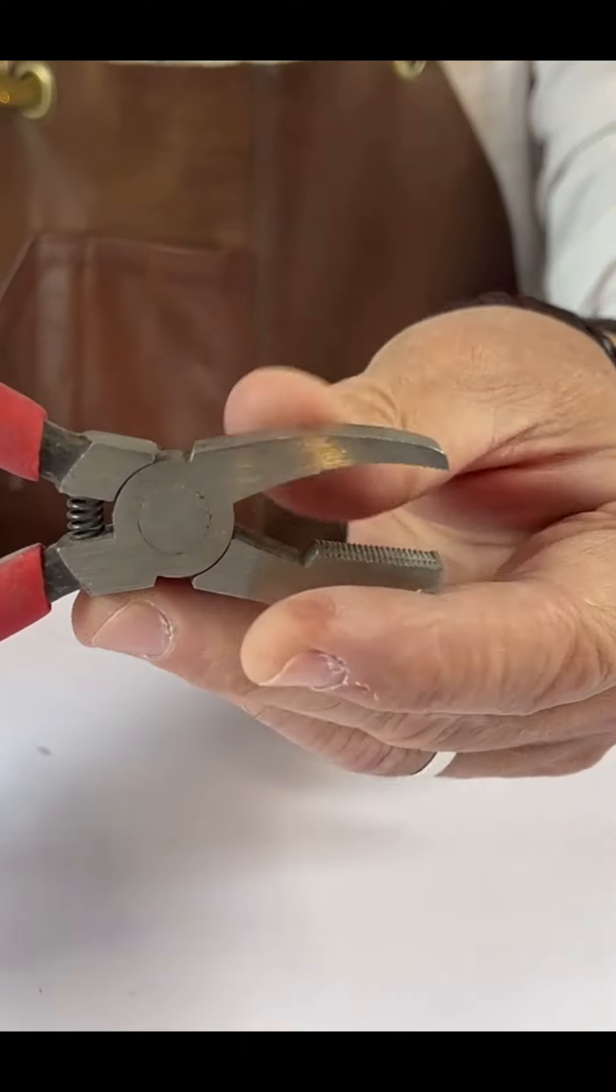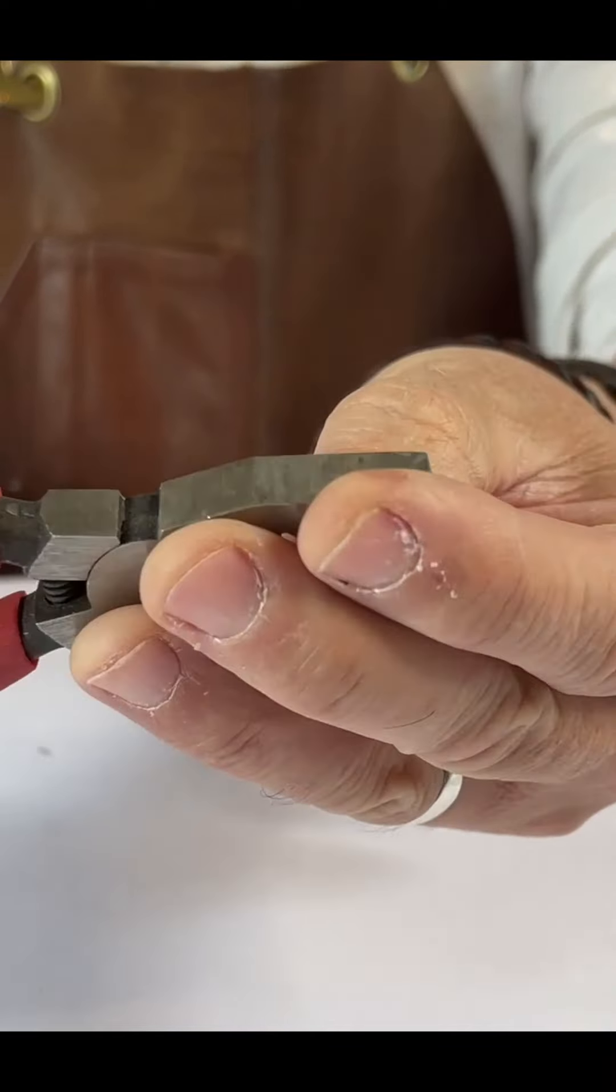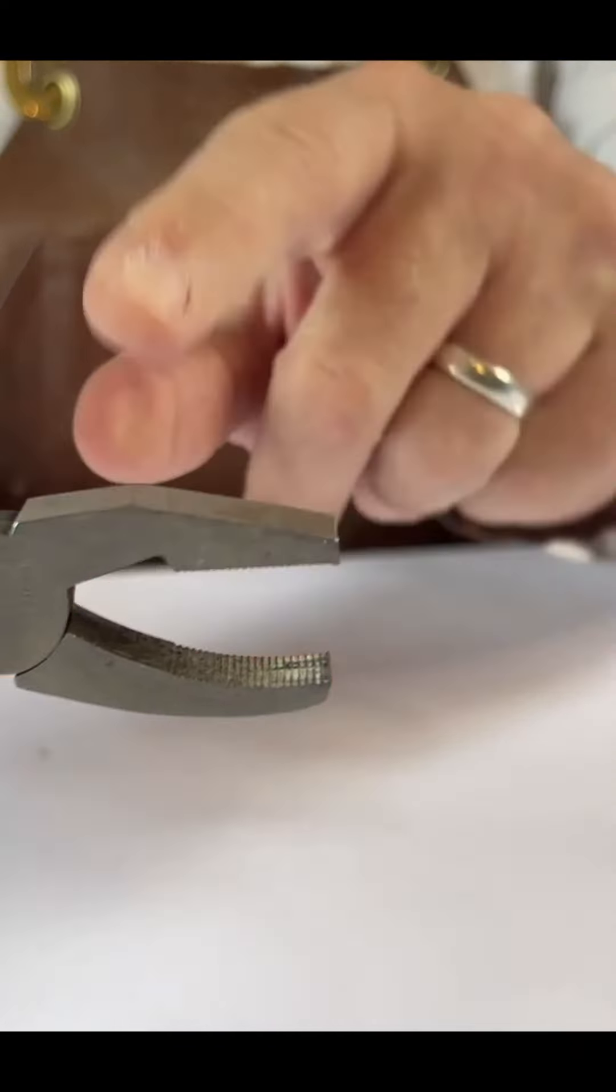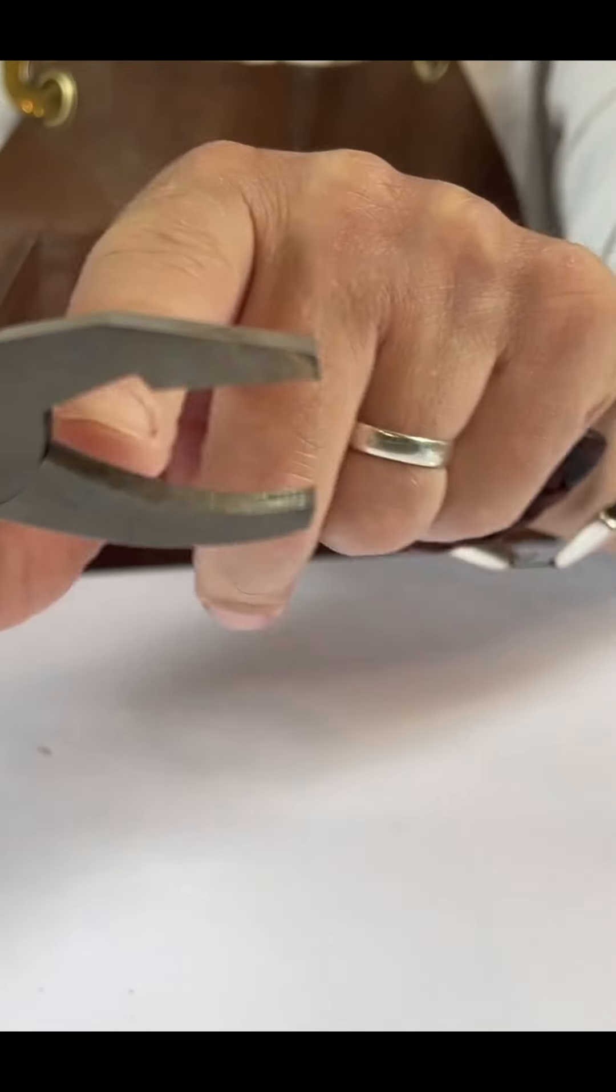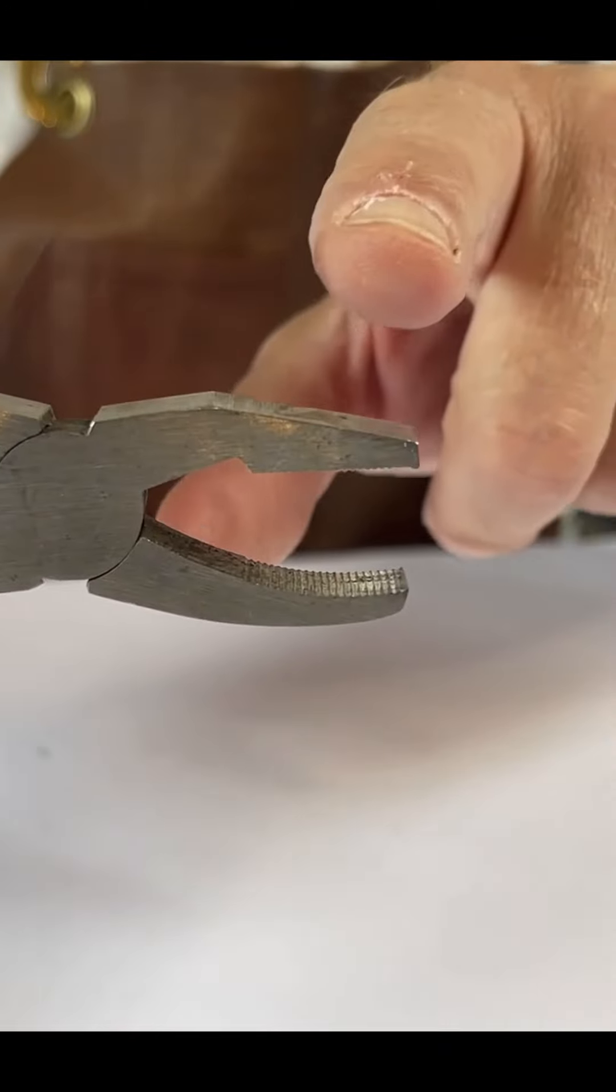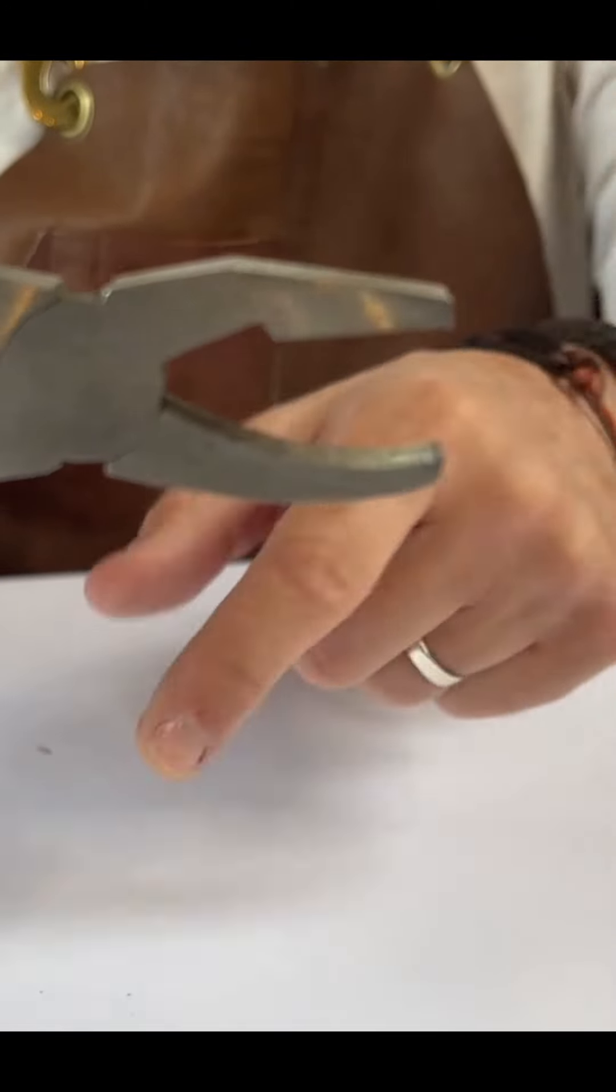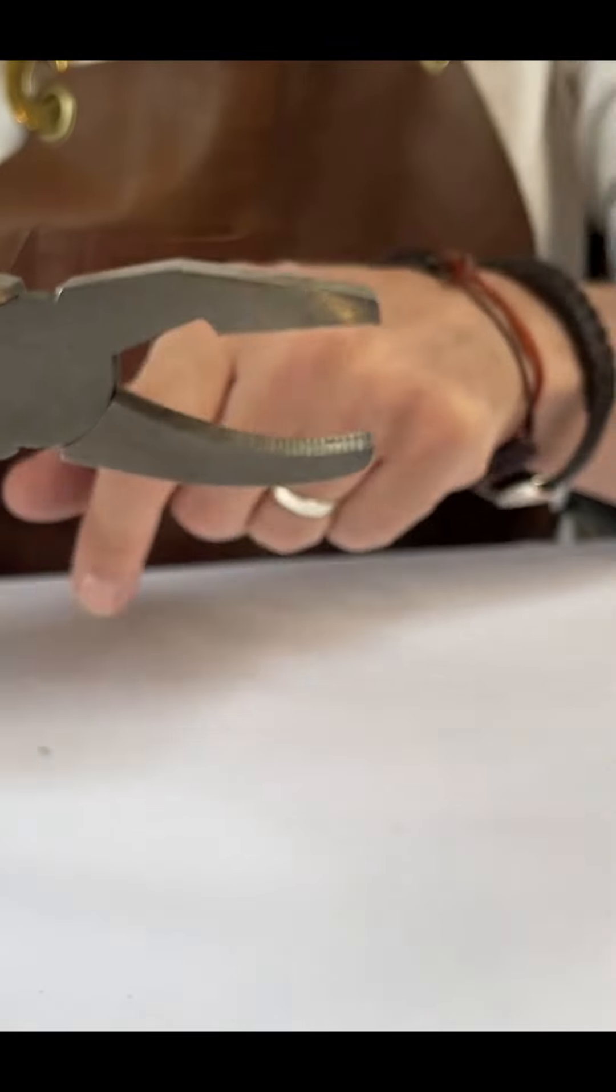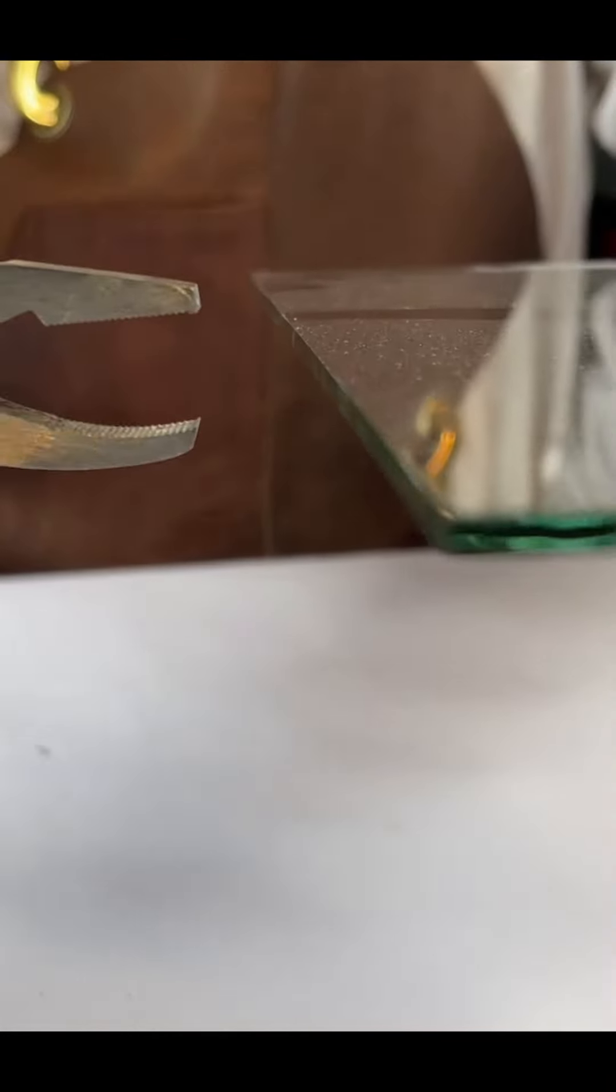So looking at the pliers, these are the grozing pliers, and as you can see if you're looking closely at it, there is a flat jaw and there is a curved jaw. The important thing to remember is that the flat jaw is the top side of the pliers and the curved jaw is the bottom side of the pliers. When you come to cut a piece of glass, you will introduce the pliers like this with the flat surface on top and the curved surface underneath.